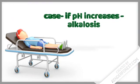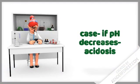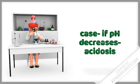Alkalosis happens because increased pH causes alkaline nature. If pH decreases, it causes acidic nature. Thus, if pH increases, alkalosis happens, and if pH decreases, acidosis happens.